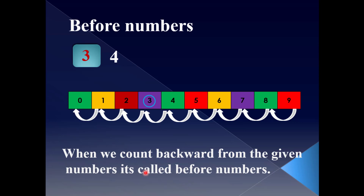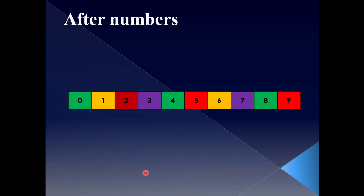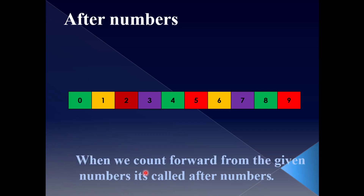And 0 is smaller than 1. After numbers — what do you mean by after numbers? See here, this is a number strip. When we count forward from the given numbers, it's called after numbers.